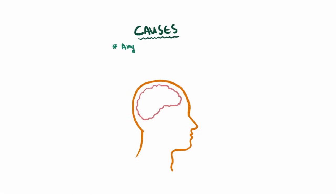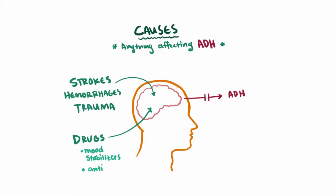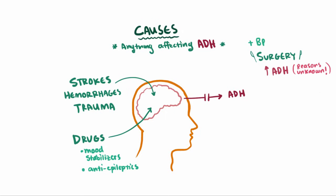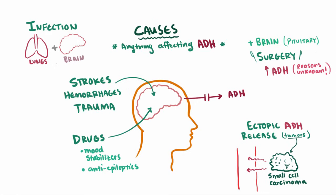What causes SIADH? Pretty much anything that messes with the secretion of ADH. Conditions like strokes, hemorrhages, or trauma to the brain can disrupt ADH release. Some drugs acting on the brain, like mood stabilizers or anti-epileptics, can also change how ADH is released. Surgery in general often causes increased ADH secretion, though we're not entirely sure why. Brain surgery specifically to the pituitary gland might cause extra ADH to be released. ADH can also be produced ectopically by tumors — meaning the tumors themselves produce and release ADH outside of the pituitary gland. Small cell carcinoma in the lungs is the type most likely to release ADH this way. Infections in the lungs and brain are also linked to increased ADH secretion.